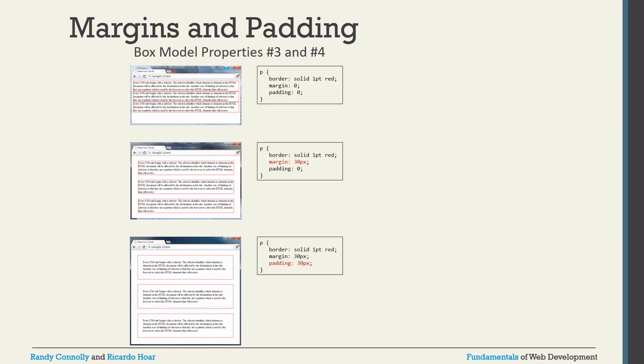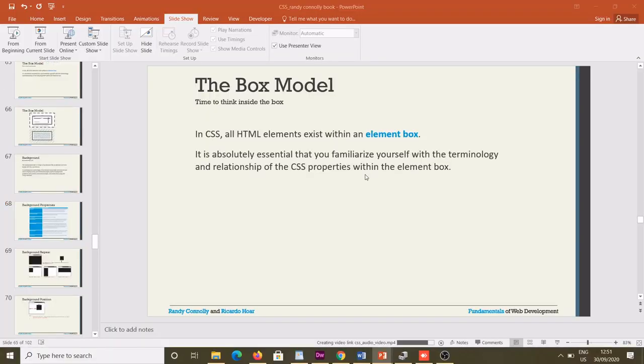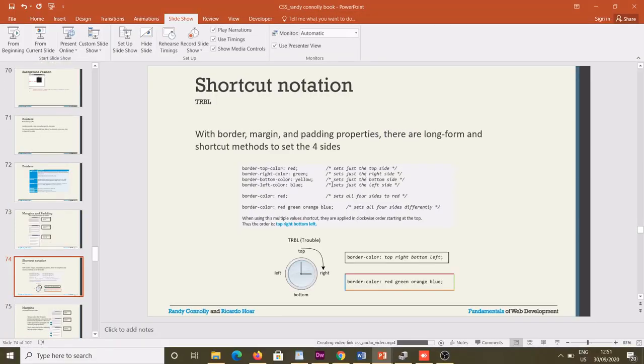So the difference between margin and padding is: padding applies inside the box — it controls the space between the content and the border. Margin applies outside the box — it controls the spacing from the webpage or surrounding elements. Padding can also be applied inside a table. That covers the box model — in the next class we will discuss the next topic. Thanks for your presence.